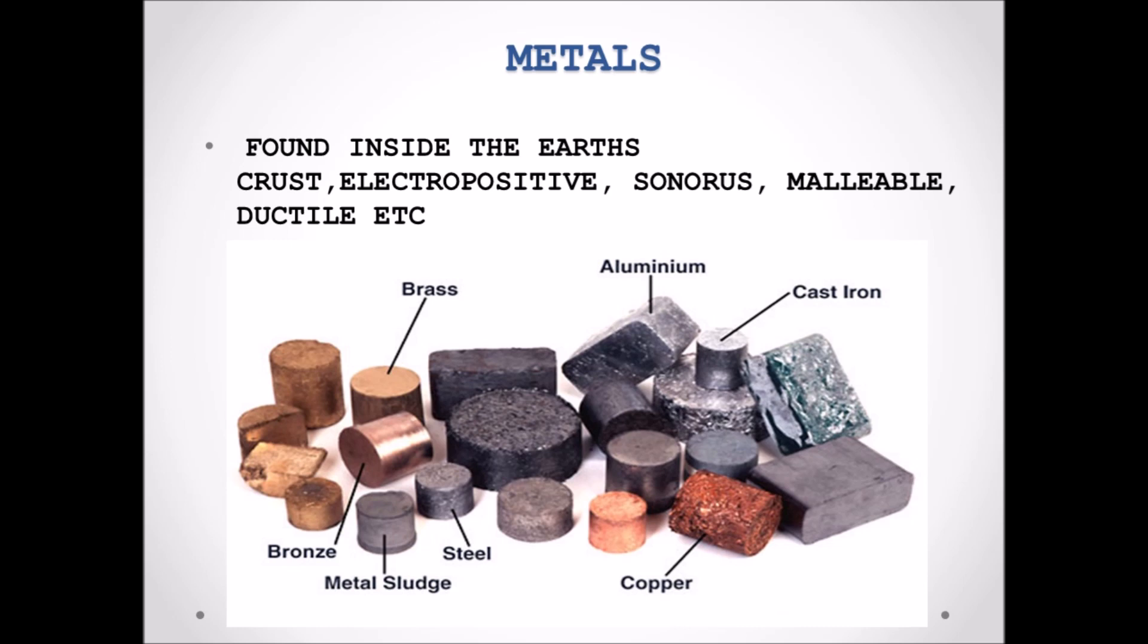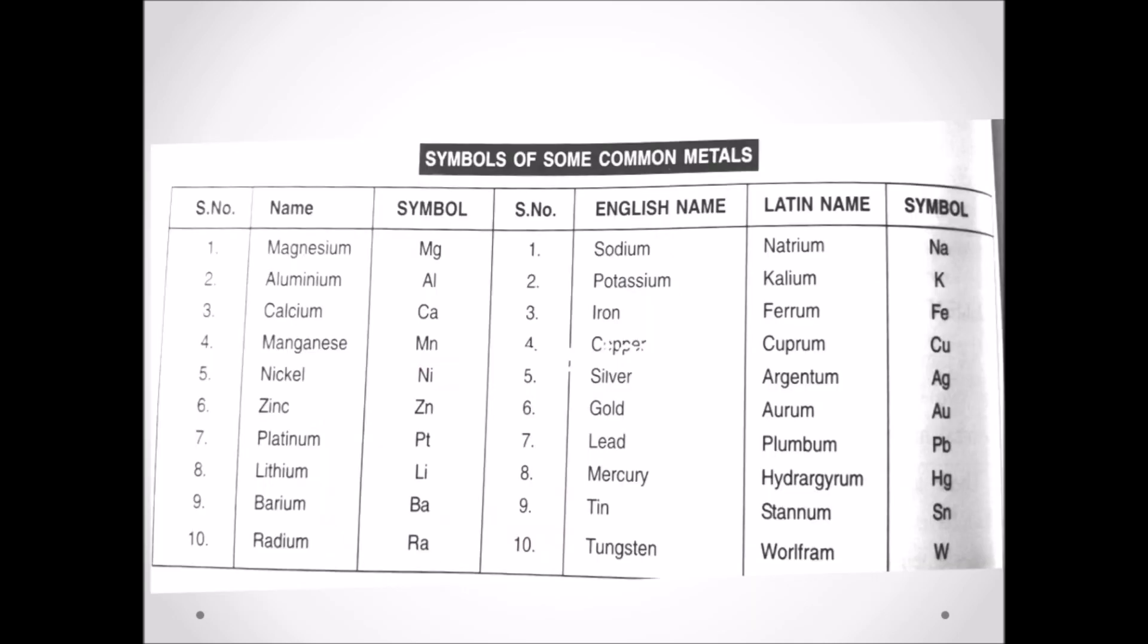In this picture we can see some of the most common used metals. Here we can see some of the common metals used in the table. The metals from magnesium to radium, the symbols are derived from the names, whereas on the right hand side of the table, from sodium to tungsten, the symbols are derived from the Latin name.